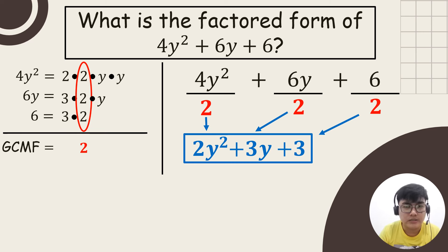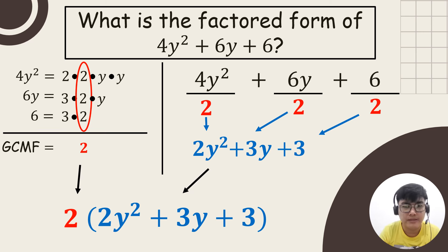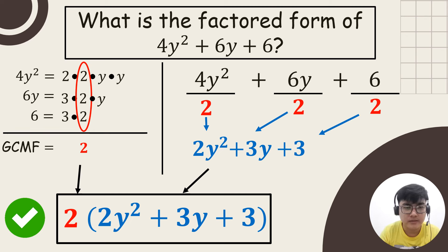The final answer will come from the GCMF and our answer here, which is 2 times the quantity 2y squared plus 3y plus 3. Therefore, the factored form of 4y squared plus 6y plus 6 is 2 times the quantity 2y squared plus 3y plus 3.